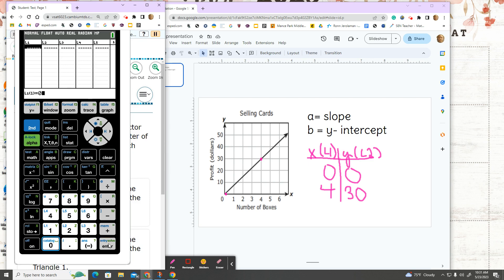So I'm going to hit 0, enter, 4, enter, and then I'm going to go over, hit the over button, and do my y values in L2: 0, enter, 30, enter.